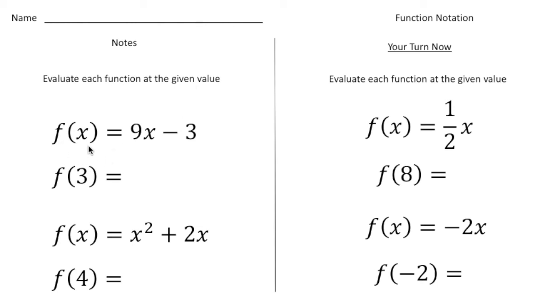So here we have the function f of x equals 9x minus 3. Remember, f of x really just means y. So we want to know what's the y value when the x value is 3. So if I do 9 times 3, that's 27. And 27 take away 3 is 24. So I know that when the x value is 3, the y value would be 24.